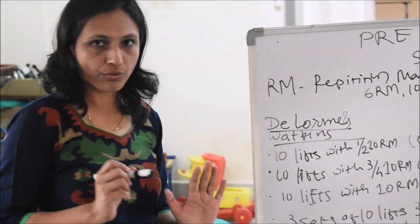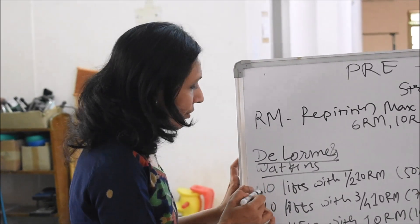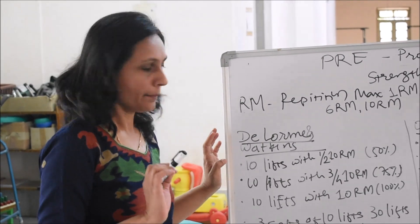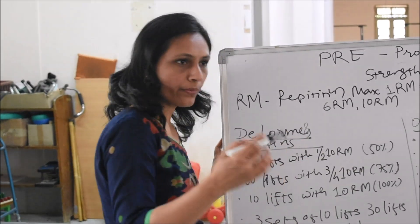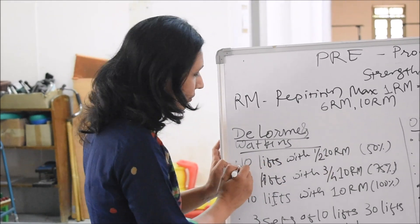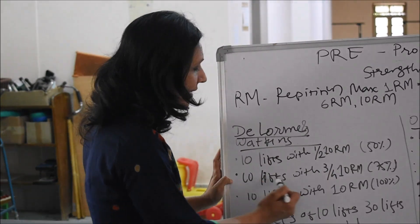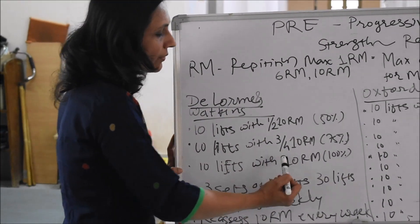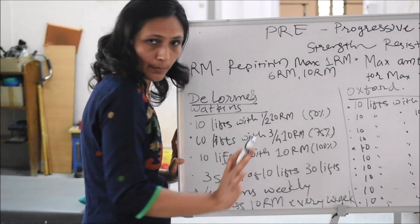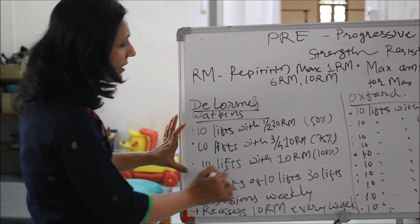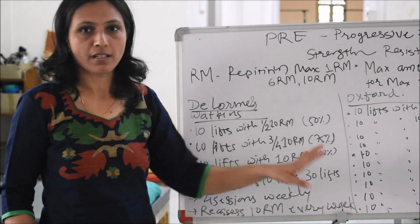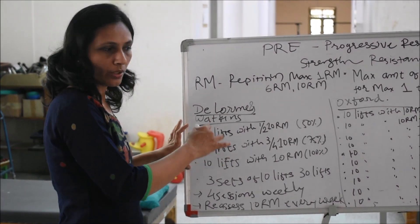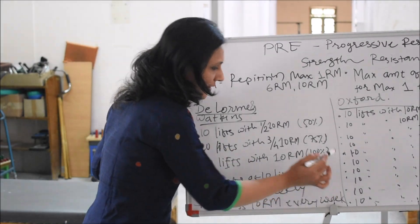In the DeLorme and Watkins technique, you first find out the 10RM. Then you ask the patient to do 10 repetitions with half of the 10RM (50%), the next 10 repetitions with 75% of the 10RM, and the final 10 repetitions with 100% of the 10RM. This gives 3 sets of 10 repetitions, making 30 total lifts in one session.